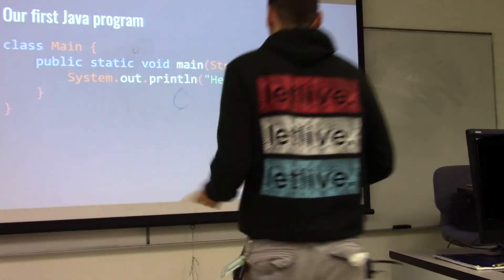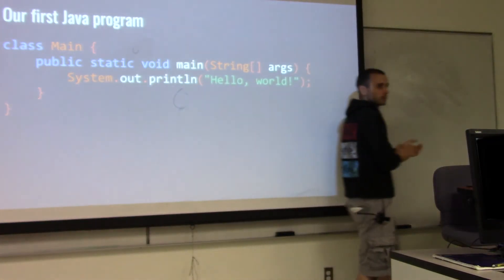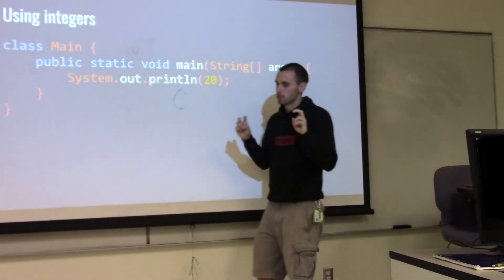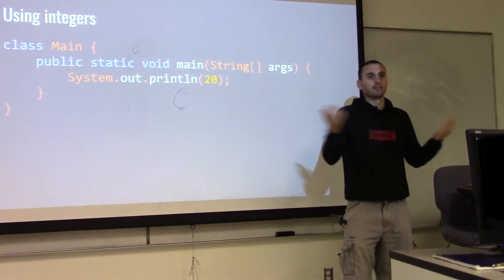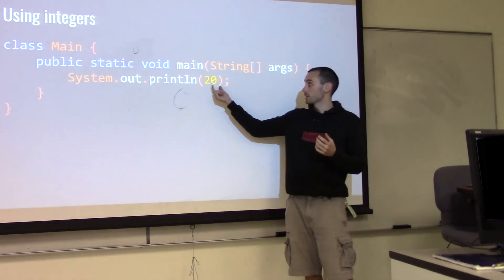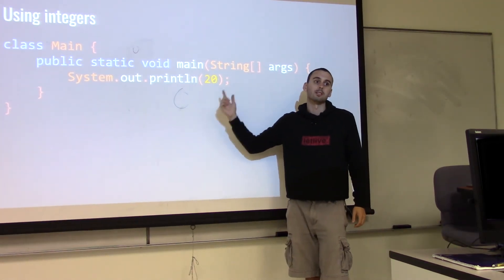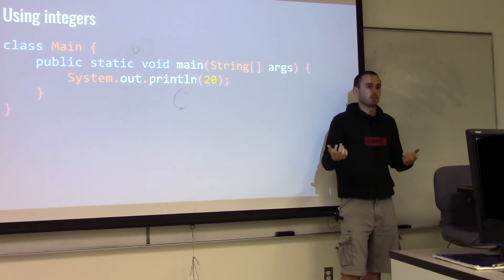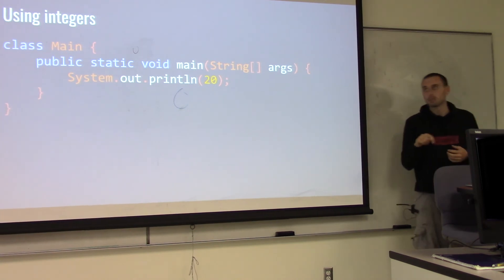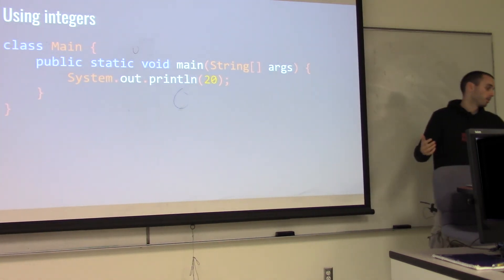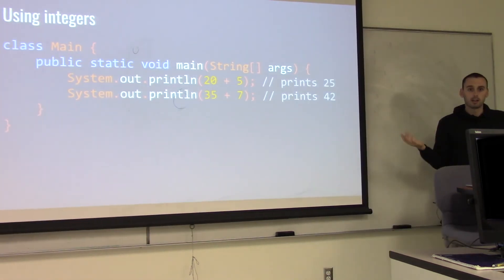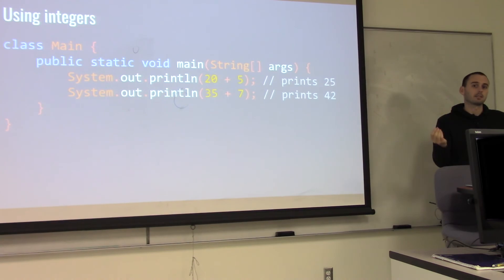Good job everybody — you are now all programmers, give yourselves a round of applause! The next thing is integers. Everything inside of quotes is treated like text — we call those things Strings, capital S, like a string of letters. A plain numeric value is called an int — an integer, a whole number. 20, 10000, 0, negative 5 are all integers. You can do math with them: adding 20 and 5 will print 25. Numbers do not have quotes around them because they are not text, they are numbers.